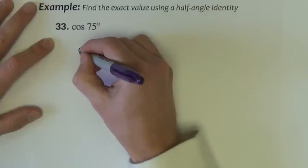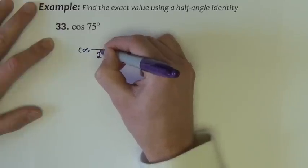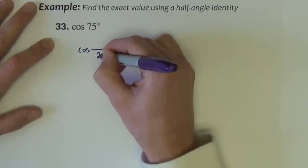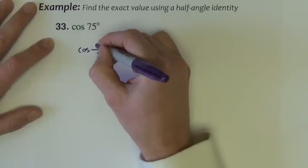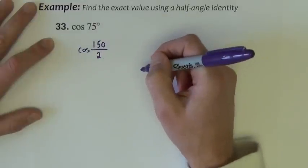Cosine of 75, I need to rewrite this as sum angle theta over 2, and I want my angle over 2 to be equivalent to 75 degrees. So I would use 150 divided by 2.